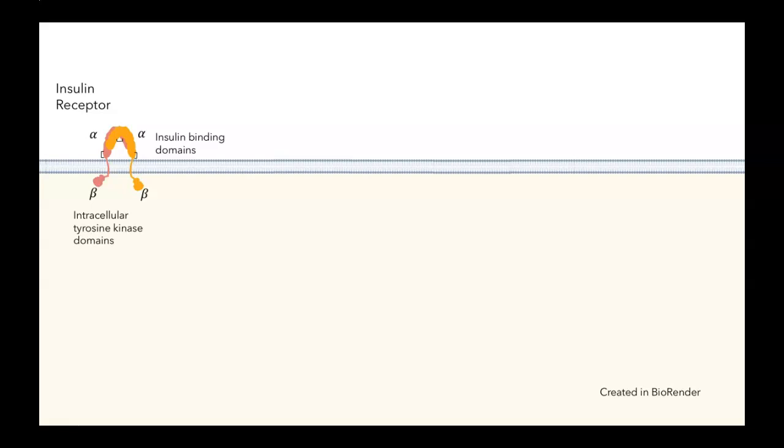However, unlike other receptor tyrosine kinases, it exists as a stable dimer even when no insulin is around. Chemists have been able to visualize the structure of the insulin receptor. In this inactivated state, it looks like an upside down V. In that shape, it's off.